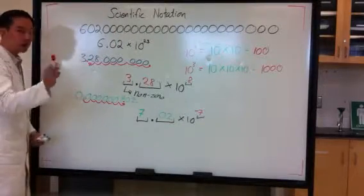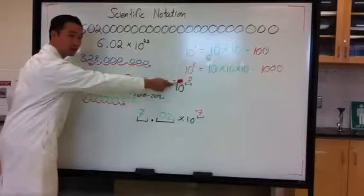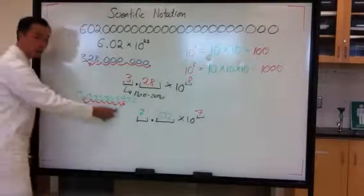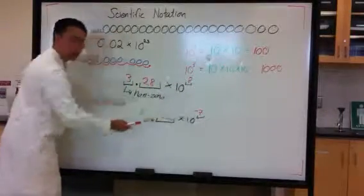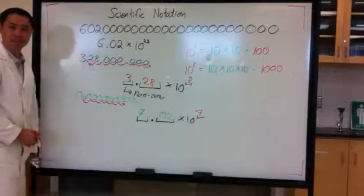So remember, large numbers greater than 1, positive exponent. Small numbers less than 1, negative exponent. Alright, good luck.